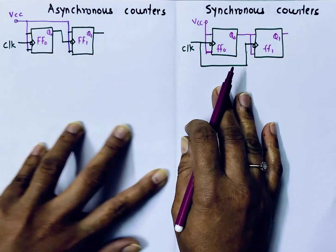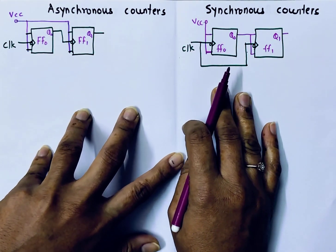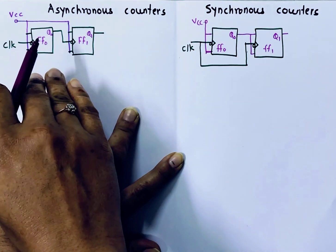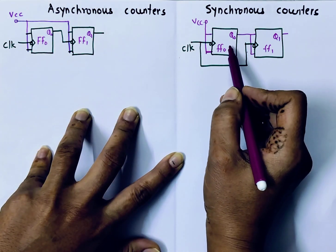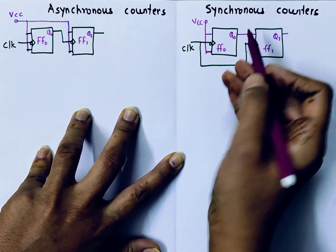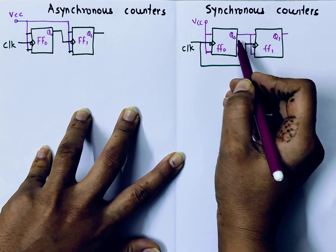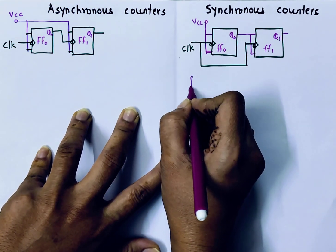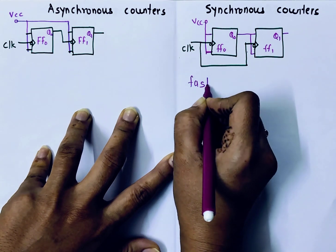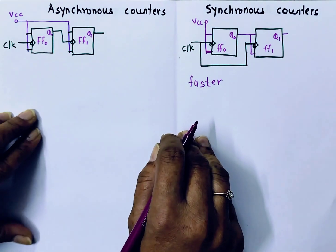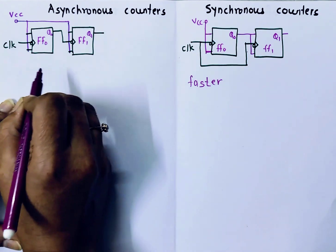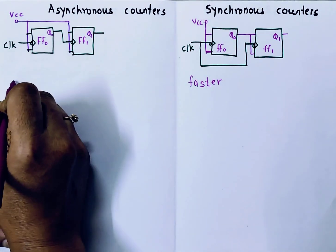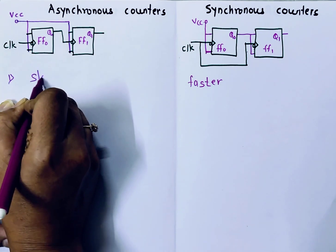It means, here in case of synchronous counter, they will generate output faster as compared to asynchronous counter. Because all flip-flops are receiving clock simultaneously, they will generate output simultaneously. So they are faster. Synchronous counters are faster. Whereas, Asynchronous counters are slower as compared to synchronous counter.